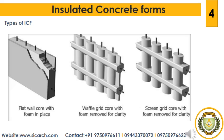The next type is the Waffle Grid ICF wall system, which has a solid concrete wall of varying thickness. It has a nominal concrete thickness of 6 to 8 inches for horizontal and vertical concrete cores. Maximum spacing of vertical cores is 12 inches and maximum spacing of horizontal cores is 16 inches. Webs in between the cores have a maximum thickness of 2 inches.